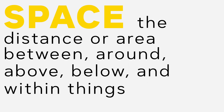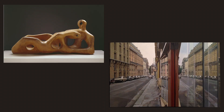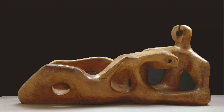All objects take up space. Space is the distance or area between, around, above, below, and within things. Space is empty until shapes or forms fill it. In some works of art space is real; in others it is only suggested. Compare these artworks — the first is a sculpture that exists in three dimensions. If you were viewing this work in person you could walk around it, enter its space, and appreciate its form.